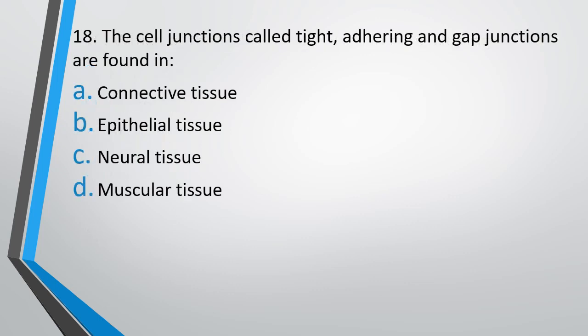Question No. 18: Cell junctions called tight, adhering and gap junctions are found in connective tissue, epithelial tissue, neural tissue or muscular tissue. The correct answer is option B, epithelial tissue.